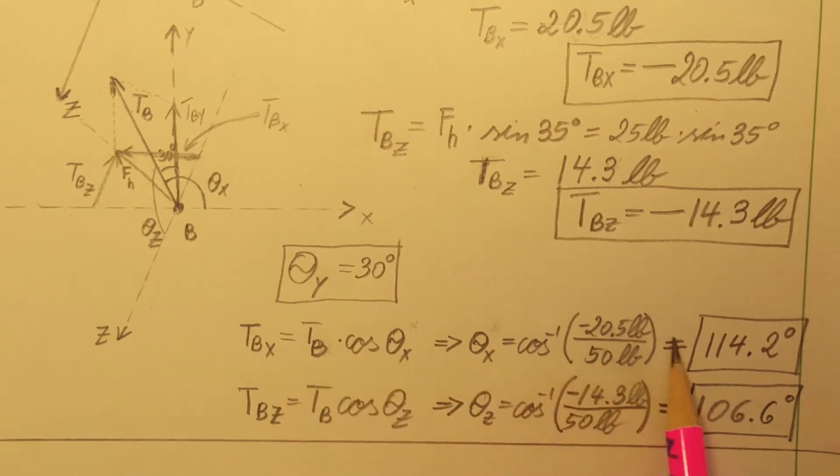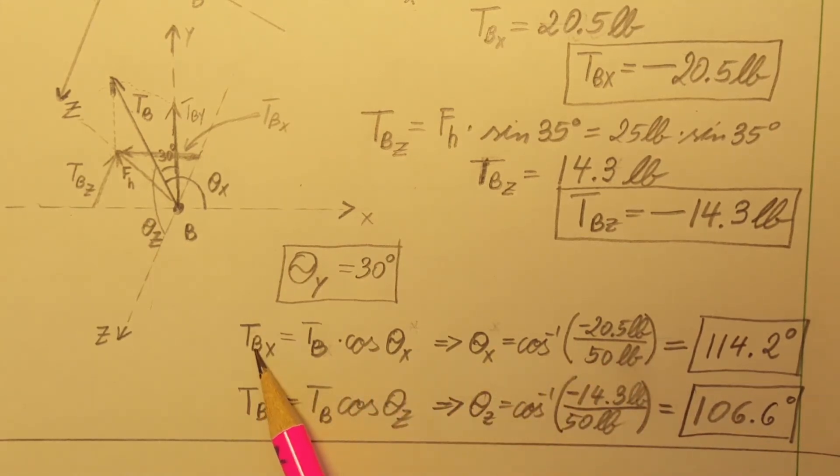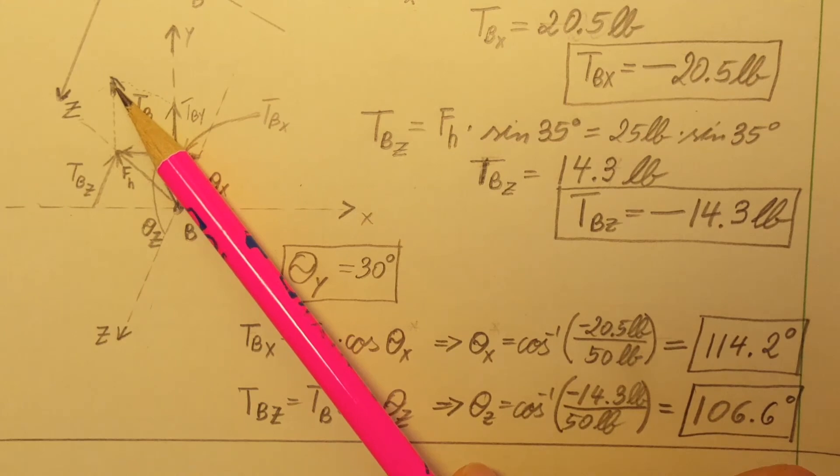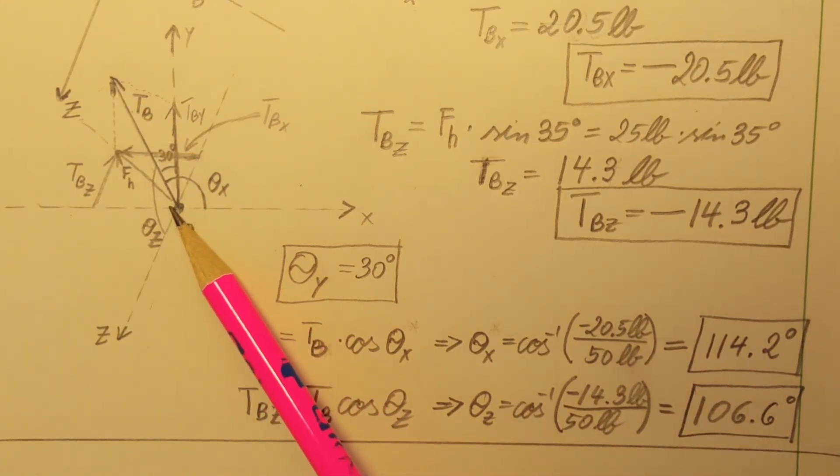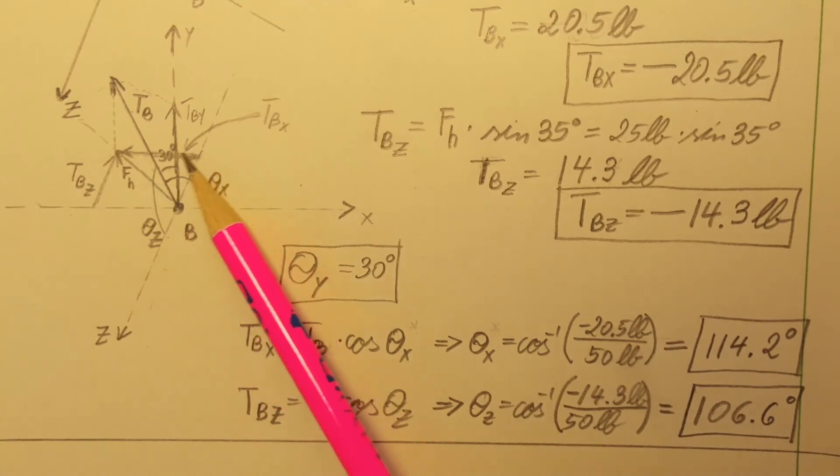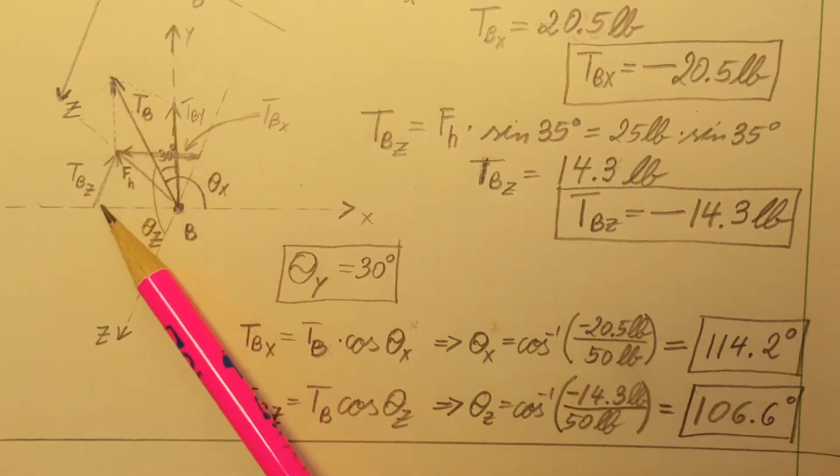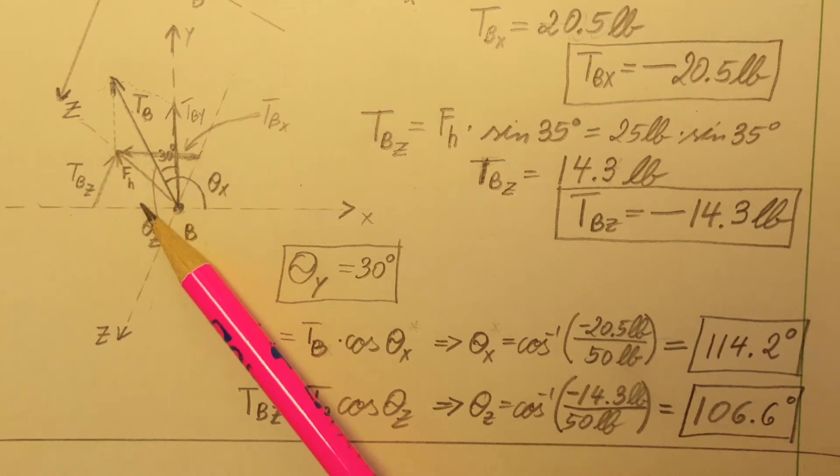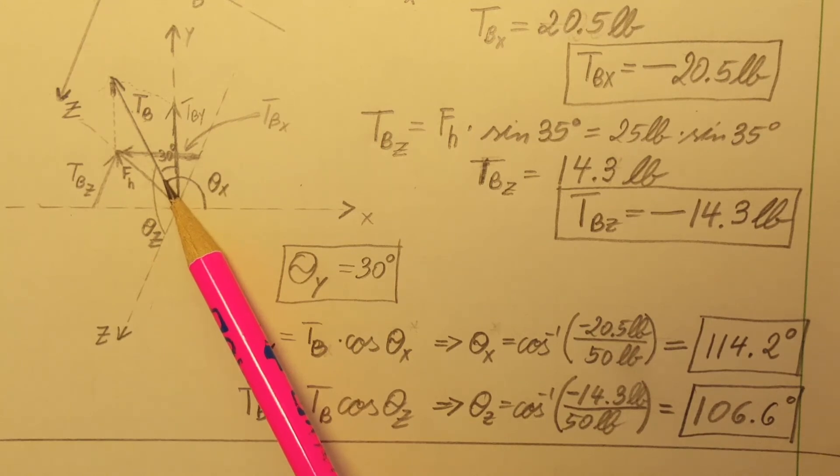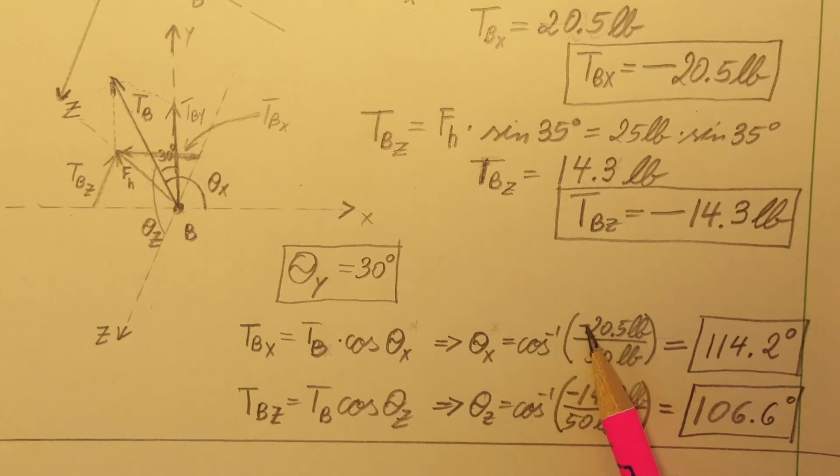Now let's find our next two angles for TB_x and TB_z. For TB_x we're going to be using the triangle from TB and the component x. We're looking for this angle, but our calculation will give us the angle that goes to the positive side of the x-axis, so this will be our theta_x. We plug in with our negative value and we get 114.2 degrees.